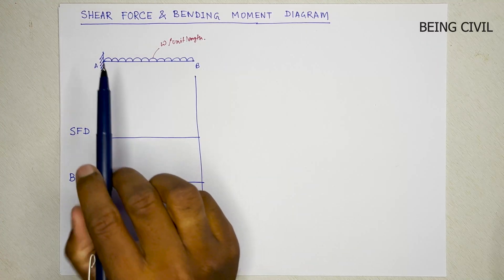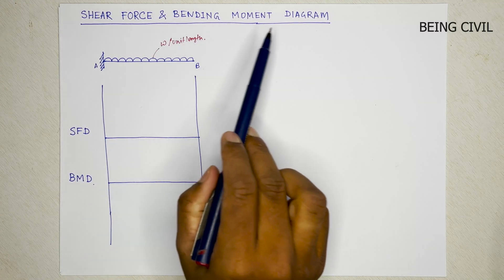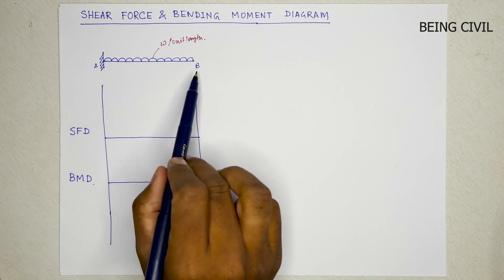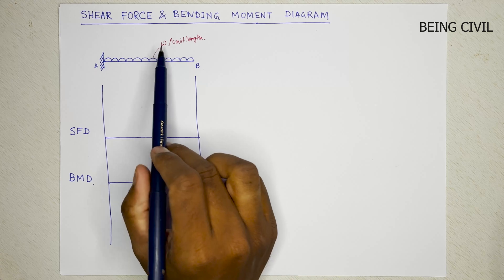Hello everybody, welcome to Being Civil. In this video, I will draw the shear force and bending moment diagram of a cantilever beam with uniformly distributed load. AB is our cantilever beam and the load is w per unit length.